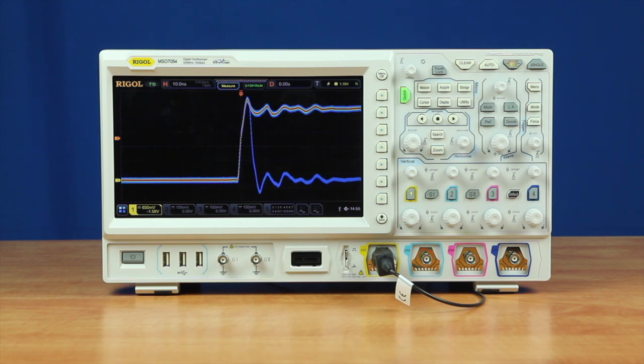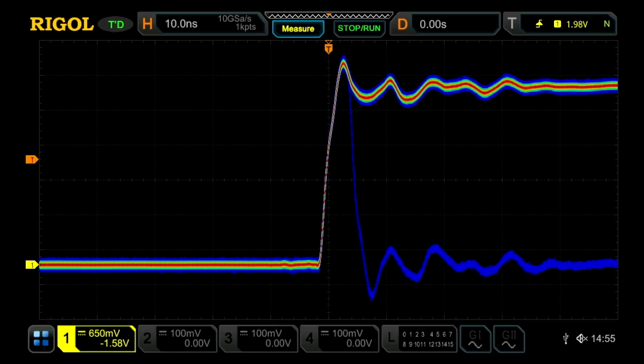The first improvement to the pass-fail testing is speed. This signal is a 1 MHz square wave with a glitch every millisecond. So 1 out of 1000 transitions are these short glitches.